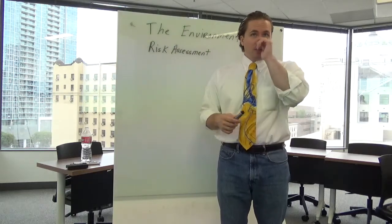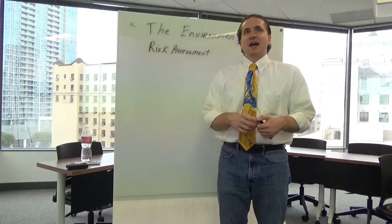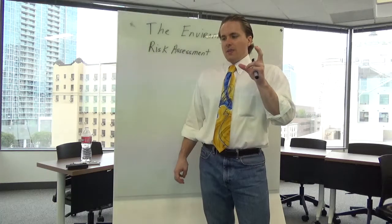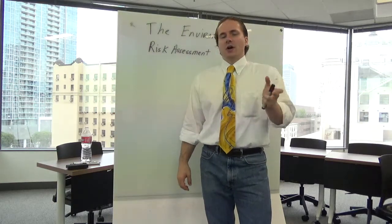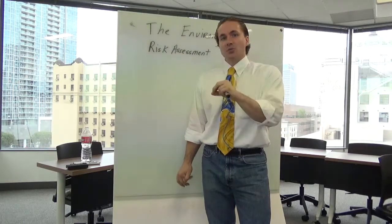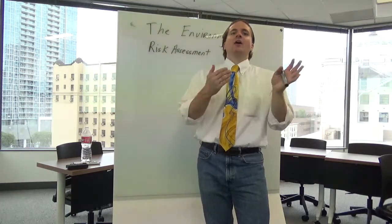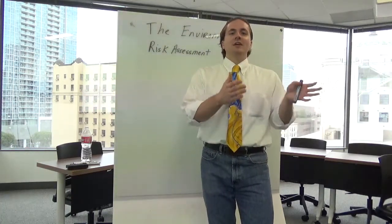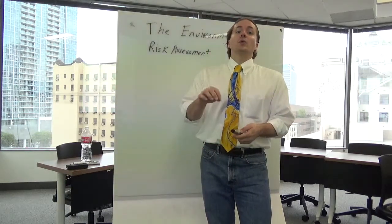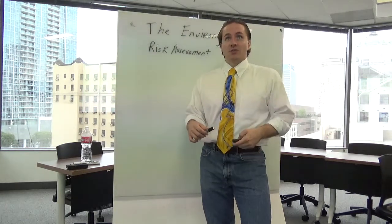The EPA and other agencies make a lot of precautionary assumptions based on the fear that scientific data may actually understate risk to human health. In other words, they err on the side of caution because we don't fully understand the human body, we don't fully understand pollution, and we don't fully understand how the two interact. They err on the side of benefiting society, of course, at the cost of business. Therefore, risks are frequently overstated to make sure that public health is protected with some sort of a margin of safety.